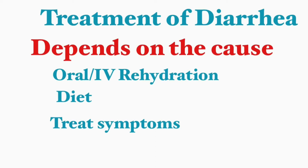For acute diarrhea lasting less than two weeks, treatment is usually to manage the symptoms and it typically resolves before two weeks. When you have diarrhea, you're losing a lot of fluid, so you need to rehydrate yourself. Signs of severe dehydration include skin tenting, increasing pulse, sunken eyes, and decreased urine output. This may require IV fluids, and you need to see your doctor for that.